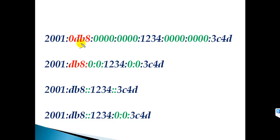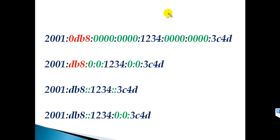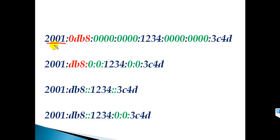Now let's look at how an IPv6 address exactly looks. Here is a sample IPv6 address: 2001:0db8:0000:0000:0000:0000:1234:3c4d. By default, an IPv6 address is a 128-bit address written in hexadecimal format. There are 128 bits total, and each portion represents 16 bits.